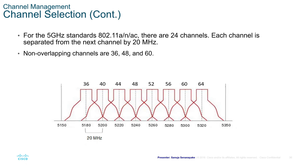For 5 GHz standards, 802.11a/n/ac, there are 24 channels, each separated from the next by 20 MHz. Non-overlapping channels for 5 GHz include 36, 48, and 60. Channel 36 doesn't overlap with 48, which doesn't overlap with 60.